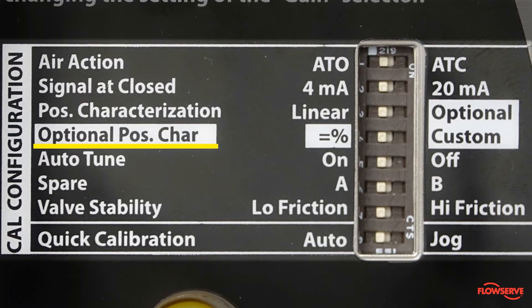The fourth dip switch, outlined in white, is the optional positioner characterization. This switch is only active when the previous dip switch is set to optional. It allows you to set your valve characteristics to either equal percent or custom as the setting is specified.